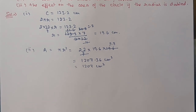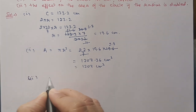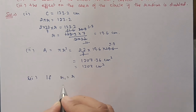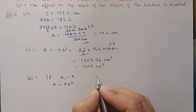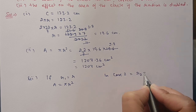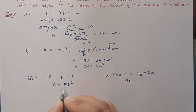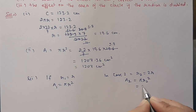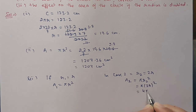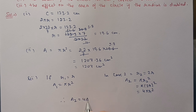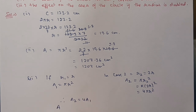For the third part, we examine the effect on area when the radius is doubled. Initially, if radius is r, area A₁ = πr². In the second case, with radius 2r, area A₂ = π(2r)² = 4πr². So when the radius is doubled, the area becomes four times. Therefore A₂ = 4A₁.